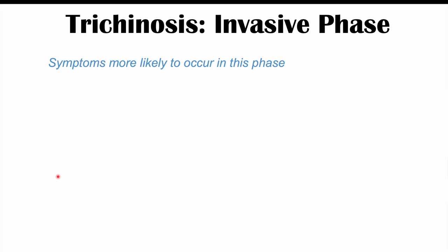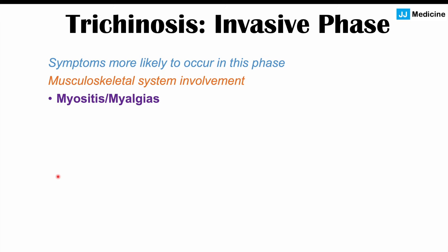Symptoms are more likely to occur in the invasive phase. In the intestinal phase, patients may have vague gastrointestinal complaints and diarrhea — the most common symptom. But in the invasive phase, we see more manifested symptoms. If the musculoskeletal system is involved — a common occurrence in trichinosis — we will see myositis and myalgias.